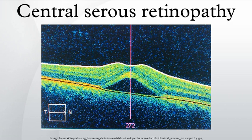A blurred or gray spot in the central visual field is common when the retina is detached. Reduced visual acuity may persist after the fluid has disappeared. The disease is considered idiopathic but mostly affects white males in the age group 20–50 and occasionally other groups. The condition is believed to be exacerbated by stress or corticosteroid use.